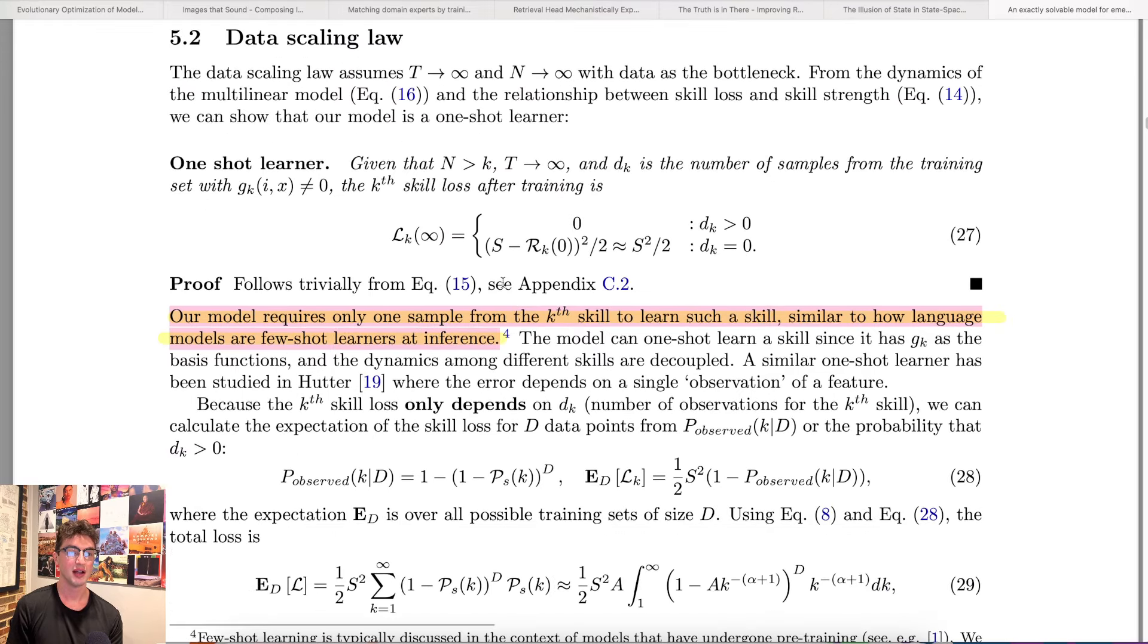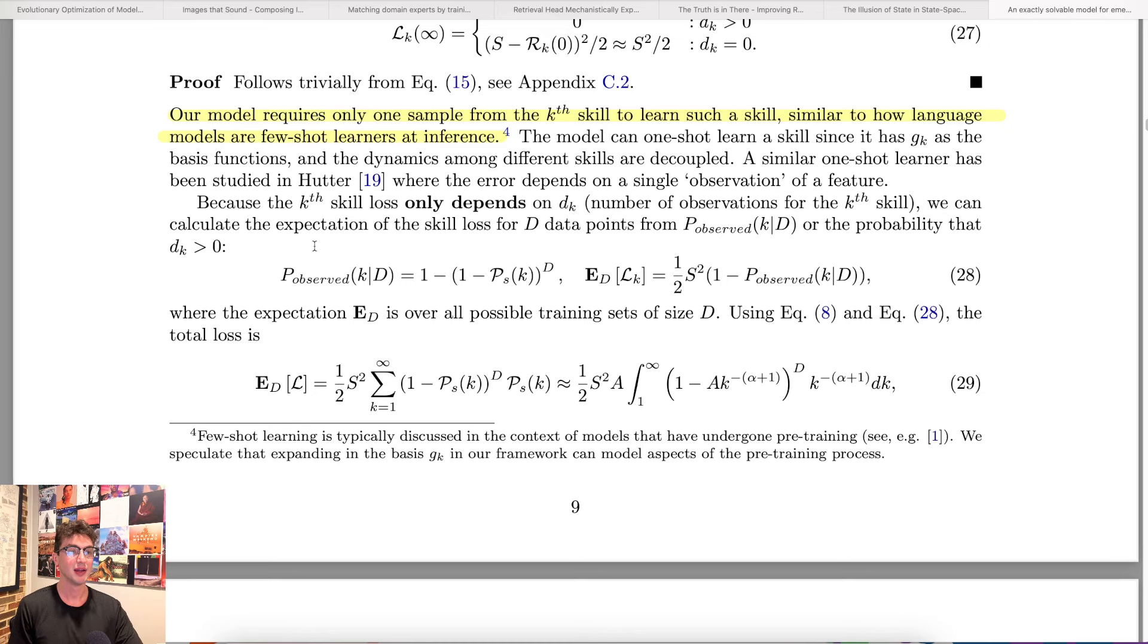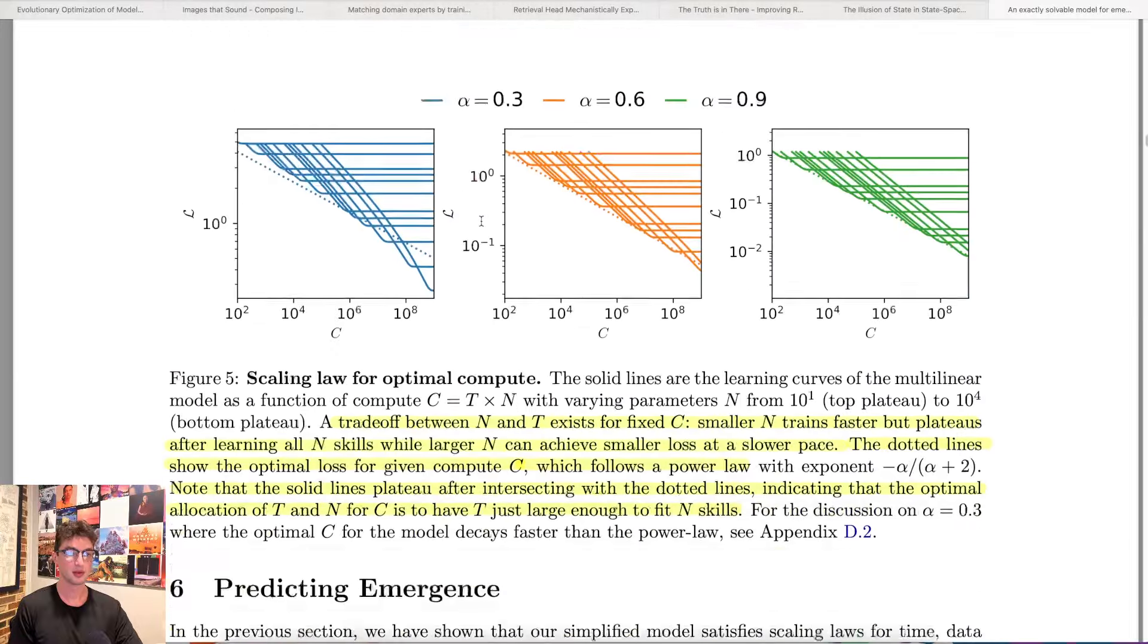So our model requires only one sample from the Kth skill to learn such a skill, similar to how language models are few shot learners at inference. This section, I didn't get too far into the math in here. I kind of started skipping over. I thought it was some cool observations, but it wasn't quite up my alley. So I just gave us the takeaways and I'm not going to pretend to understand how they got there, but basically somehow they have derived a few shot learning. And in this extreme theoretical case, it's actually a one shot learning. I imagine this is having something to do with in context learning, and cause they did say that it's relevant to a few shot learning and inference. But I don't know exactly how this math of this works. I did not get too far into it. But apparently, if you had this perfect theoretical scenario, it, they have shown the ability to do one shot learning, which is really cool. Not just few shot learning.